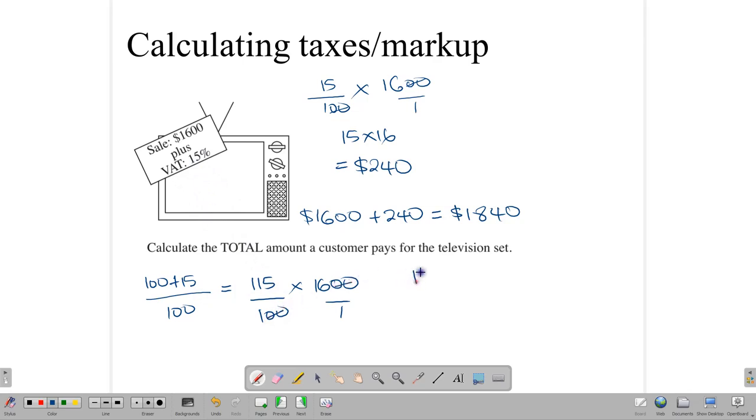We are increasing that 1,600 by 15%, which means that 100%, which it is initially, plus this 15%, brings it up to 115. And in doing this calculation, again, you will see that you will end up with 115 when you do that division here, multiplied by 16. And once you do that calculation, you're going to end up with 1,840.